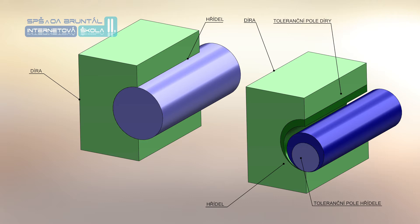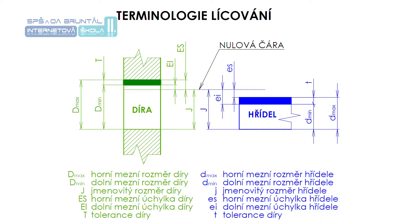že skutečné rozměry združených ploch, které spolutvoří uložení – například průměr díry a hřídele – musí ležet mezi dvěma mezními rozměry, které ještě zaručují požadovaný funkční vztah spojovaných ploch. V obrázku slovo díra označuje obecně vnitřní plochu, slovo hřídel vnější plochu.